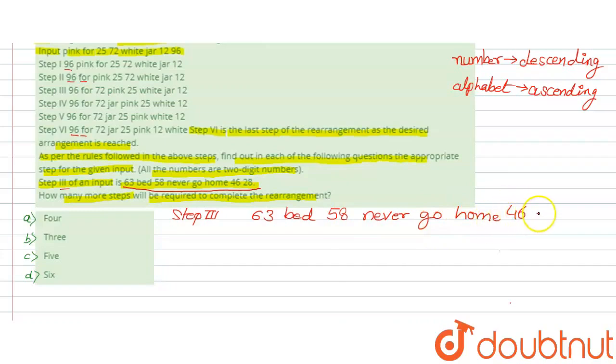When this is the third step, it means three values are already fixed. The next step will fix the next alphabetical word.